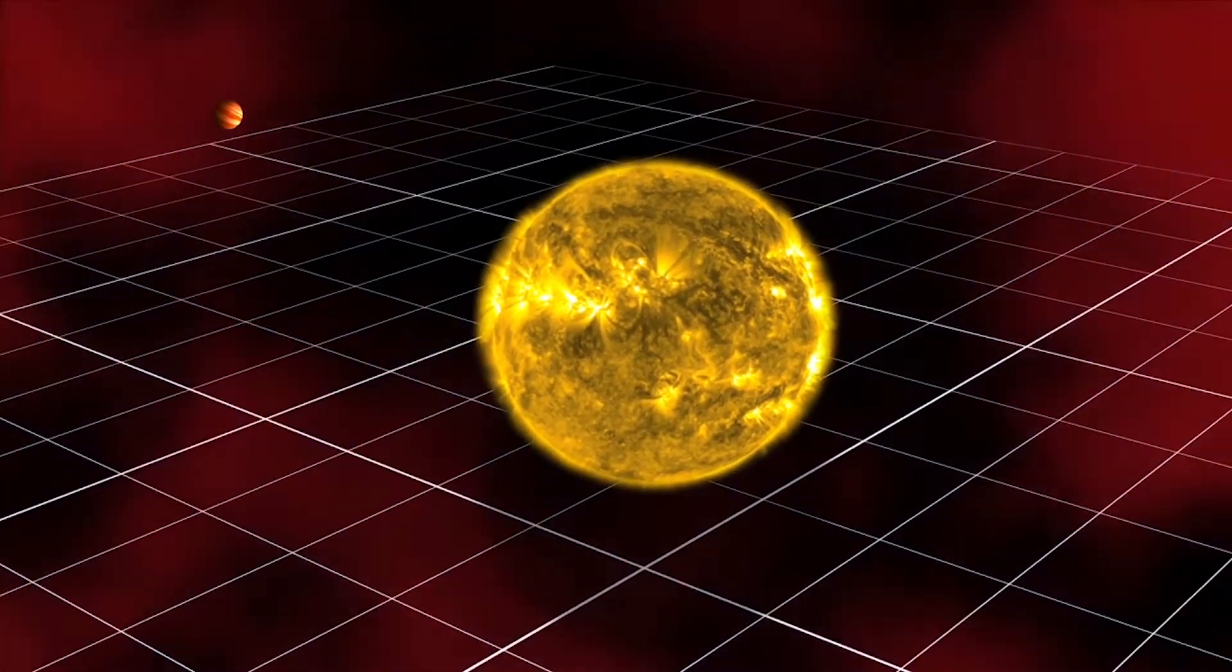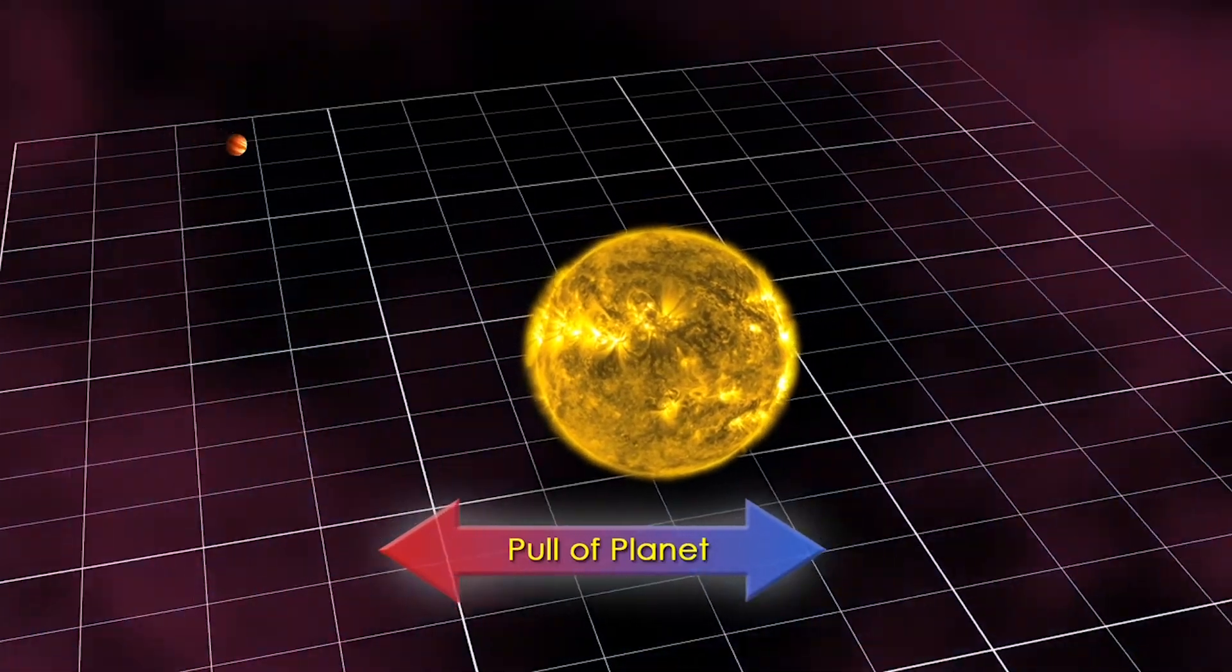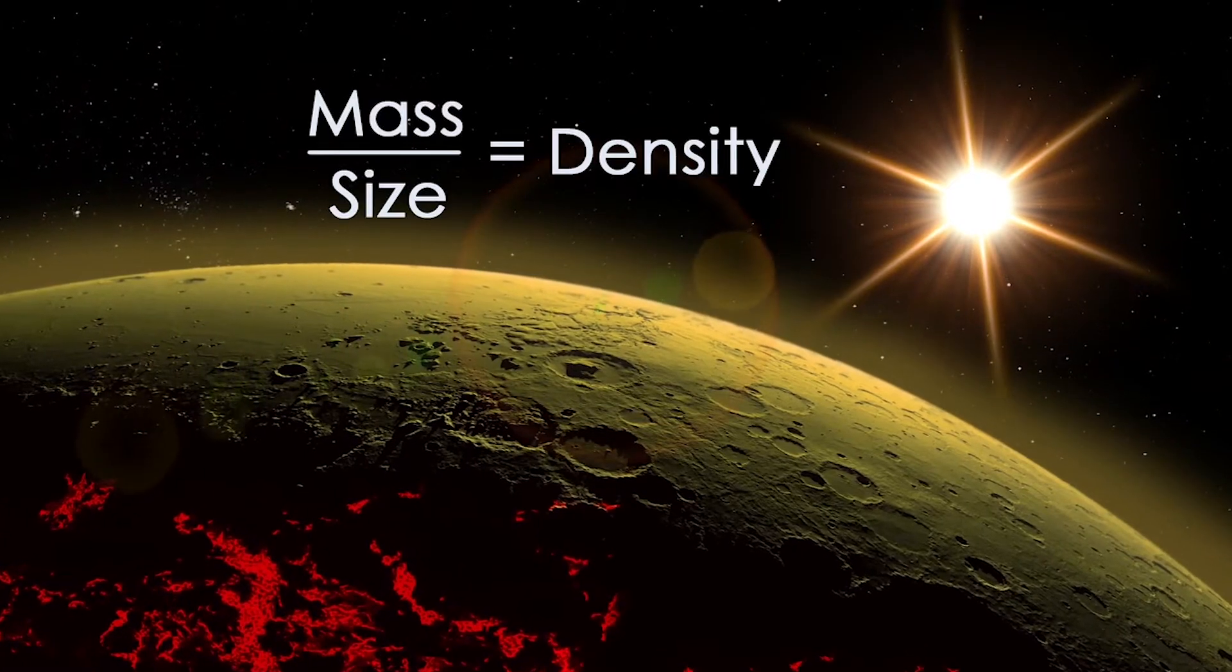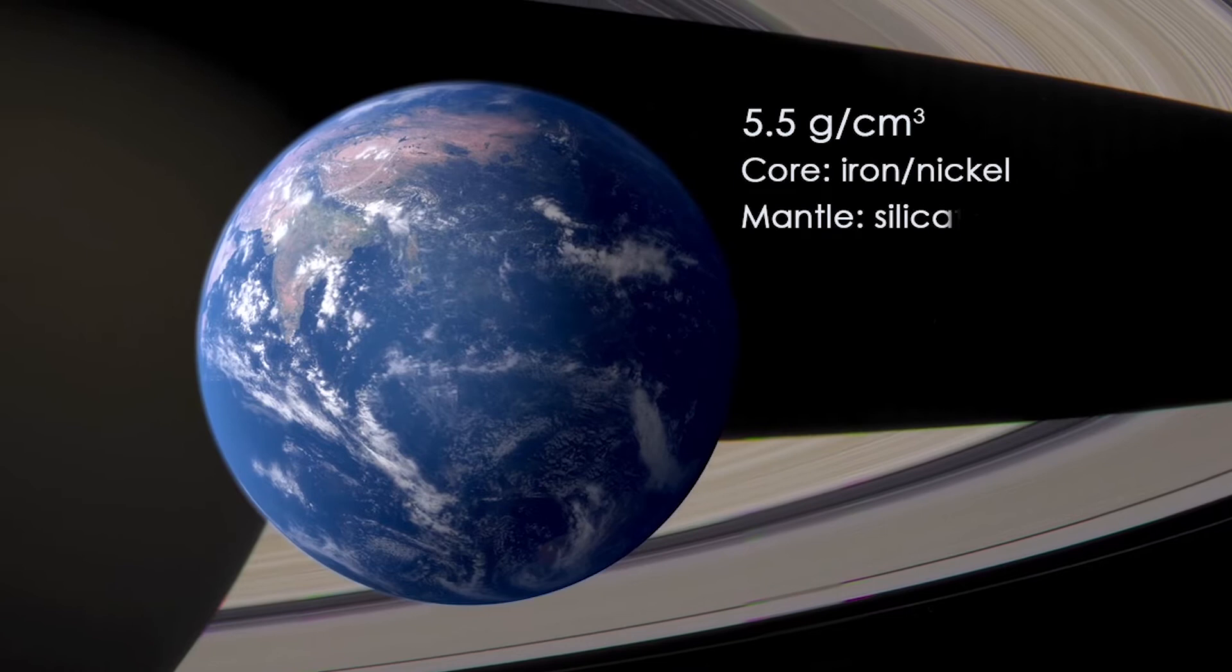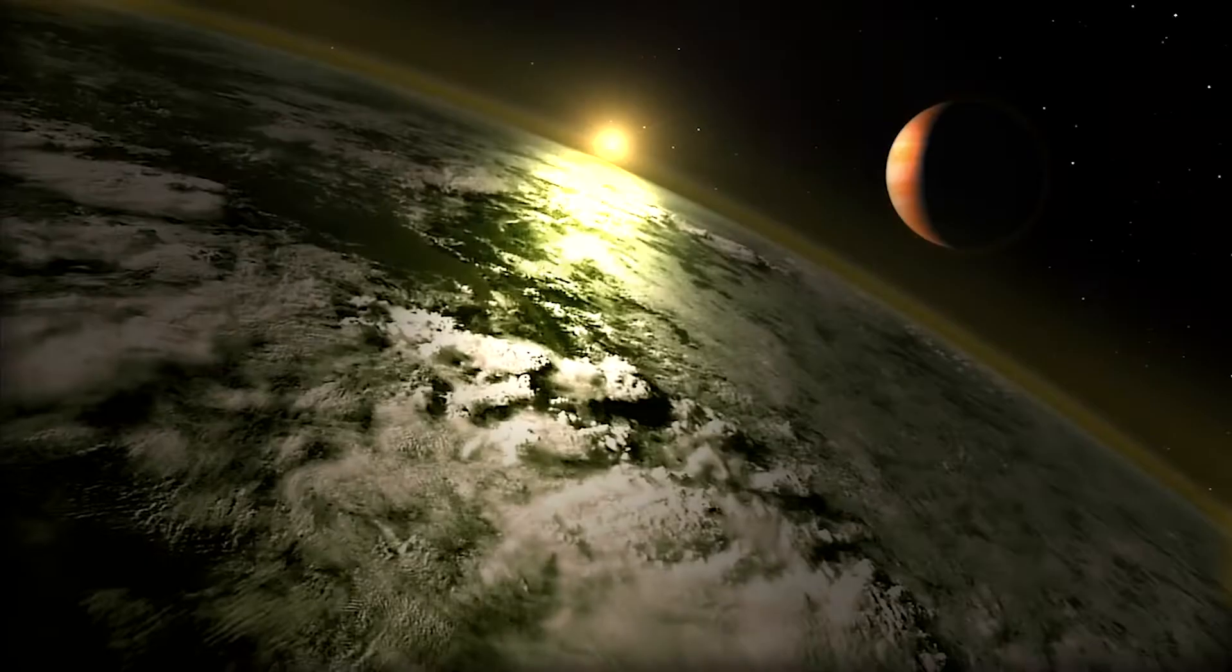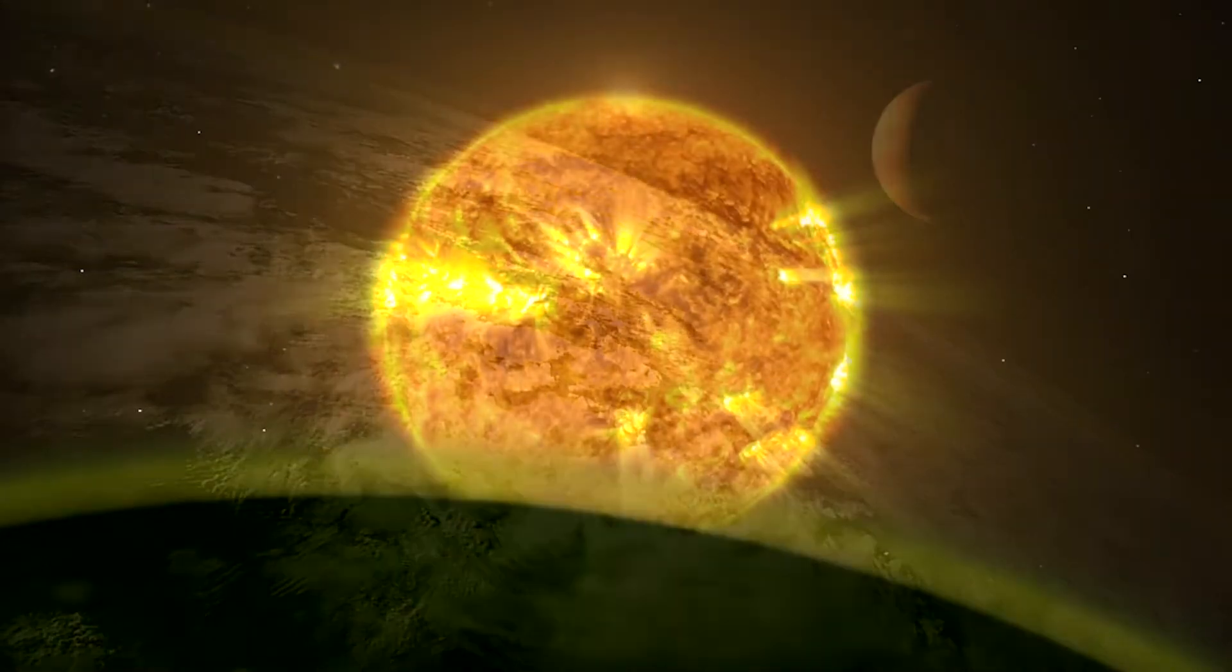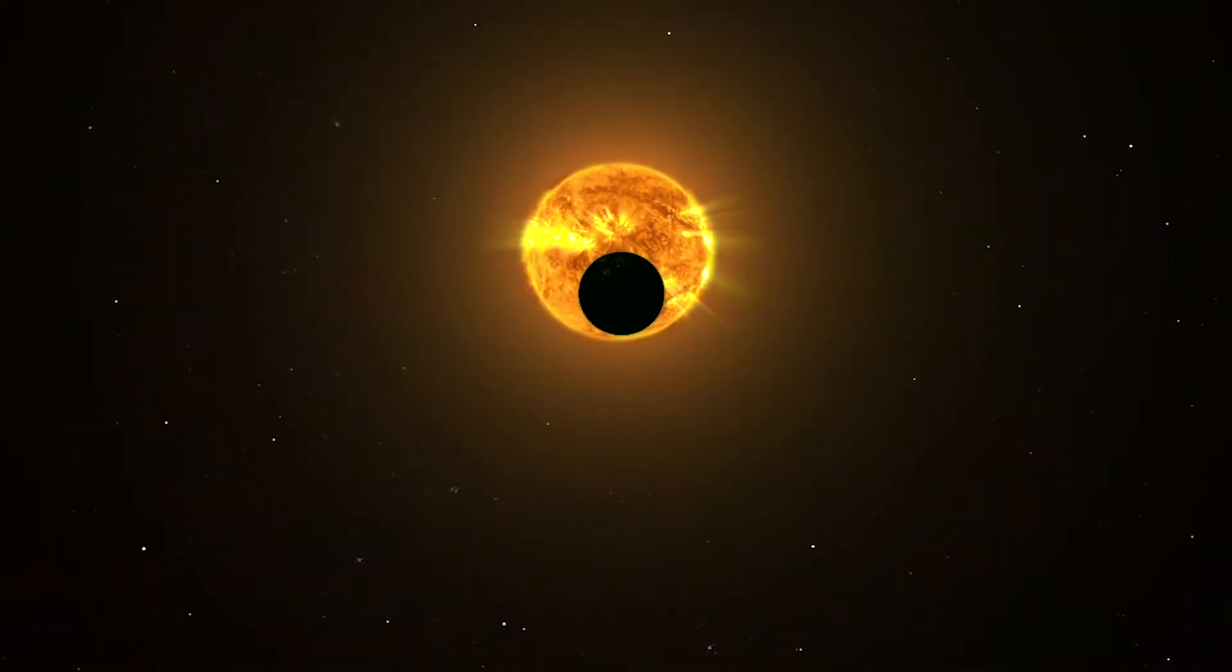By observing an exoplanet's gravitational pull on its star, astronomers can also determine the planet's mass, and thus calculate its density, to see if it is composed of rock, like Earth, or gas, like Saturn. But to fully understand an exoplanet, astronomers must study its atmosphere, and the information that they need is encoded during a transit.